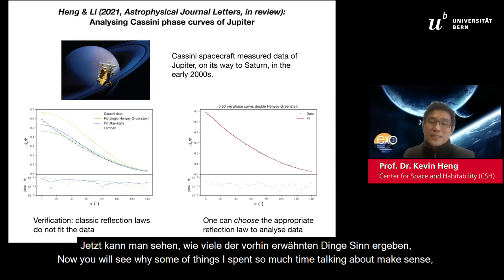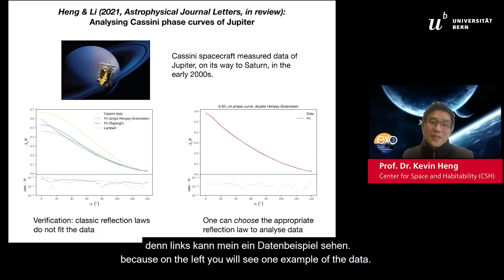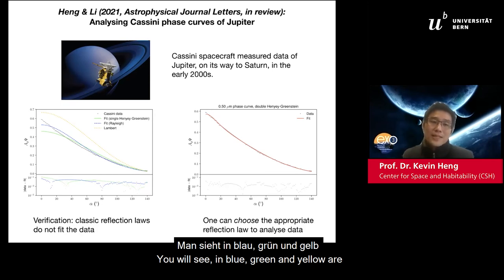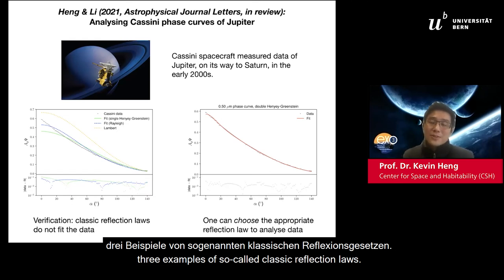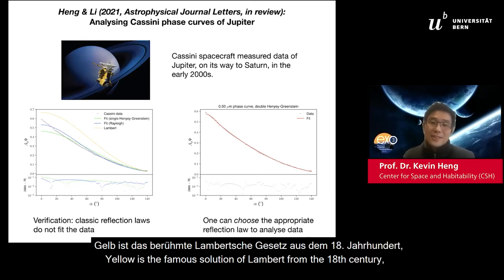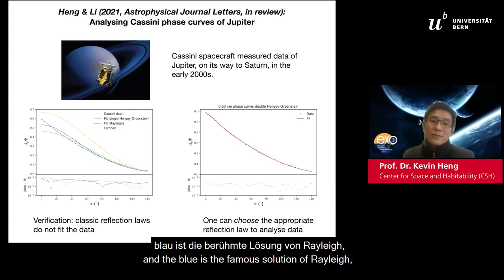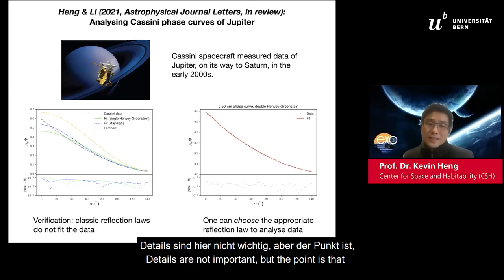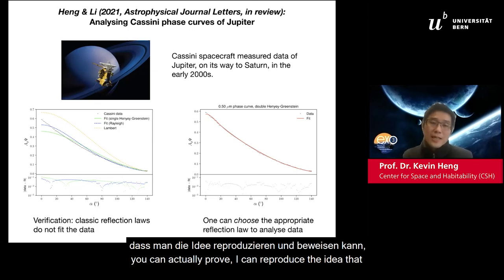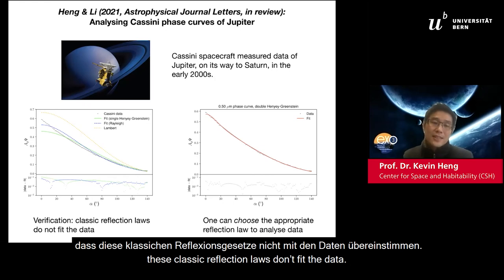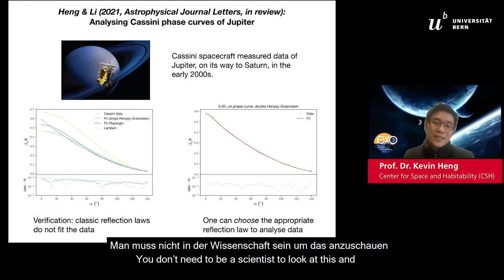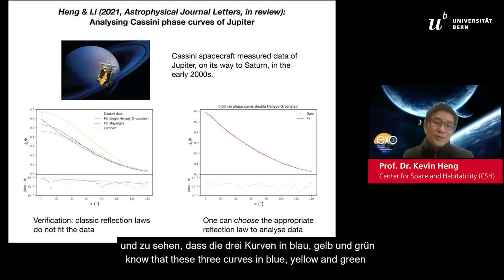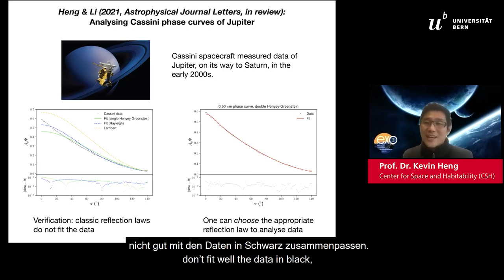Now you'll see why some of the things I spent so much time talking about make sense. On the left, you'll see one example of the data. In blue, green, and yellow are three examples of classic reflection laws. Yellow is the famous solution of Lambert from the 18th century. Blue is the famous solution of Rayleigh — also very old. Green is a solution called Henyey-Greenstein. The point is you can prove that these classic reflection laws don't fit the data. You don't need to be a scientist to see that these three curves in blue, yellow, and green don't fit the data in black.